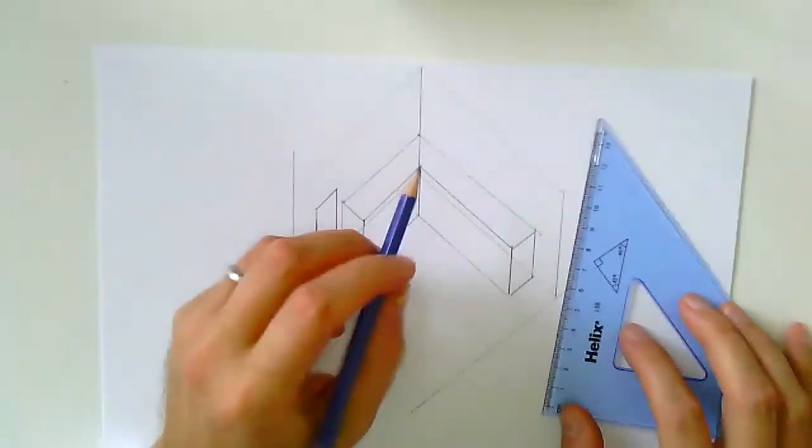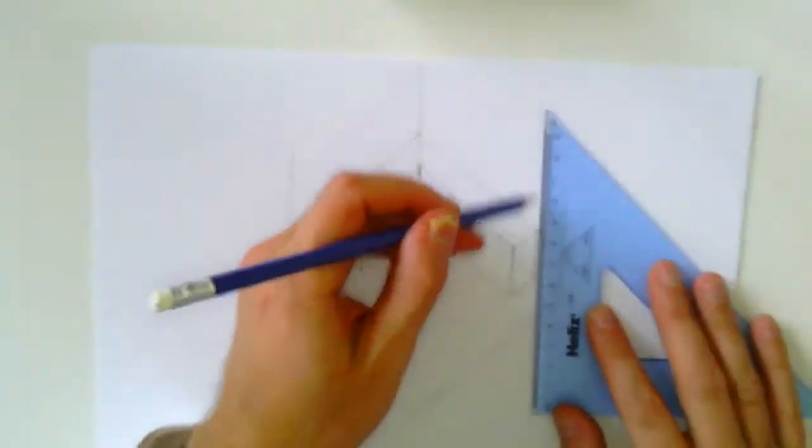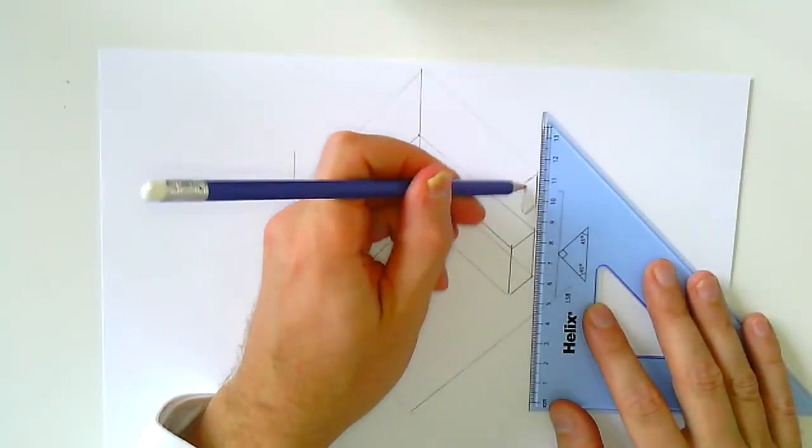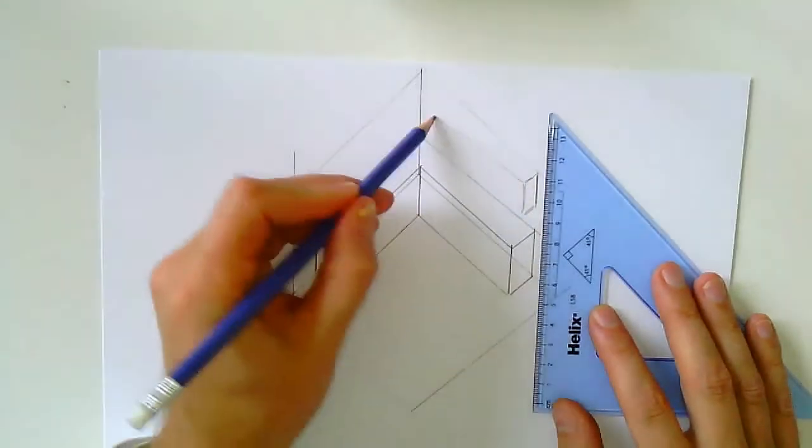And it might be that you're then asked to add some upper units in. So the upper units are going to be up here. And again, we'd use that 45-degree rule, something like that, and then carry that on into the corner.